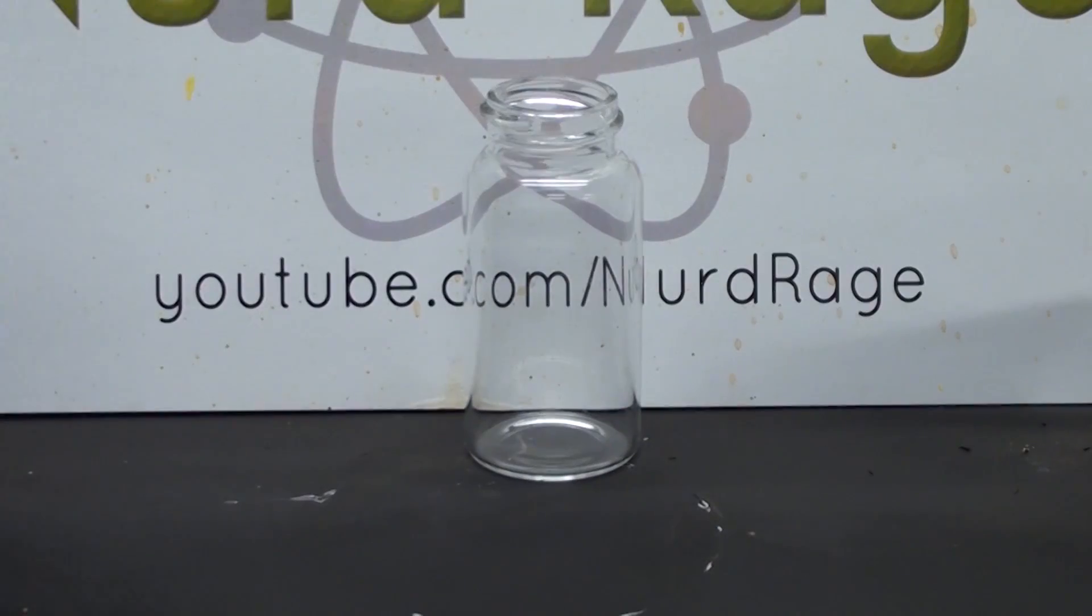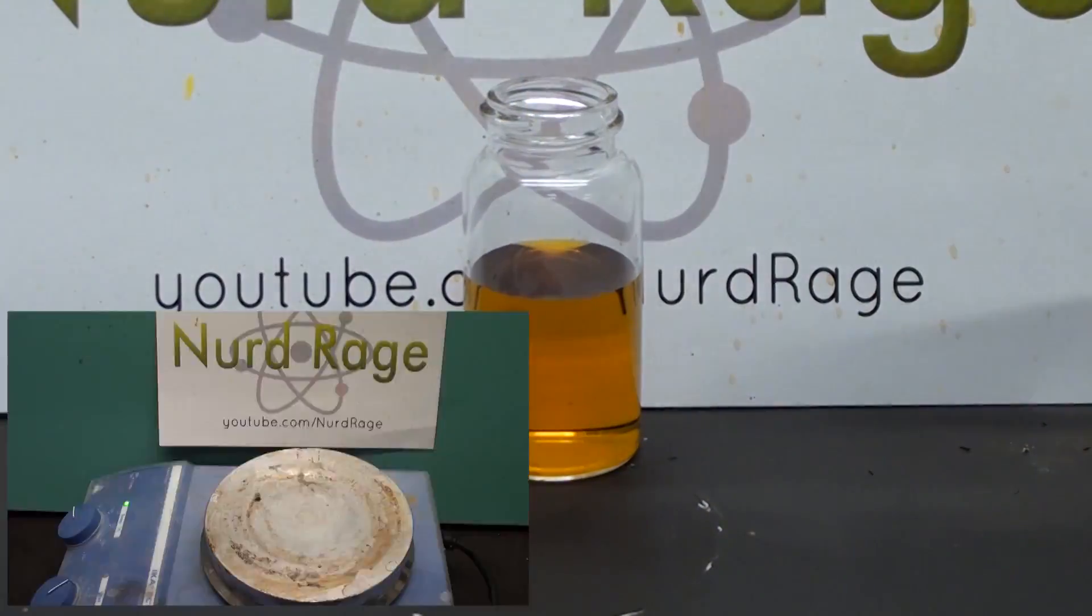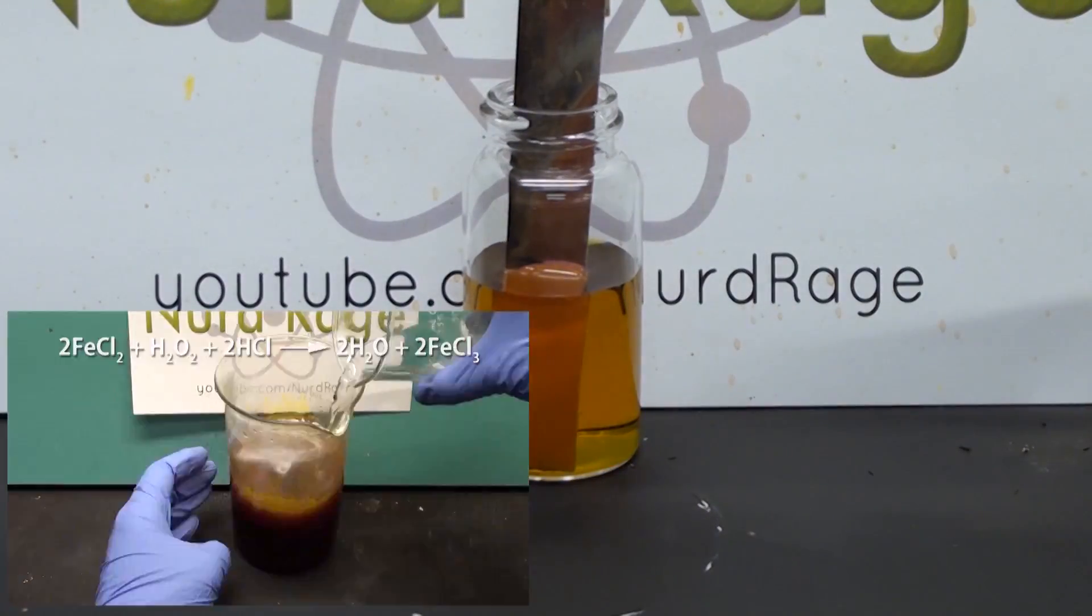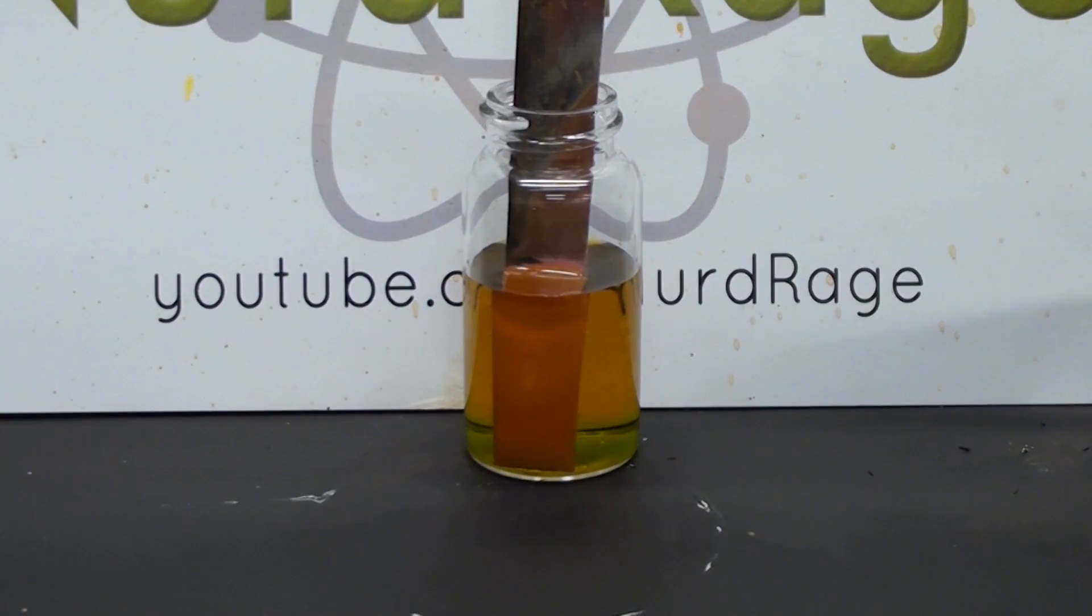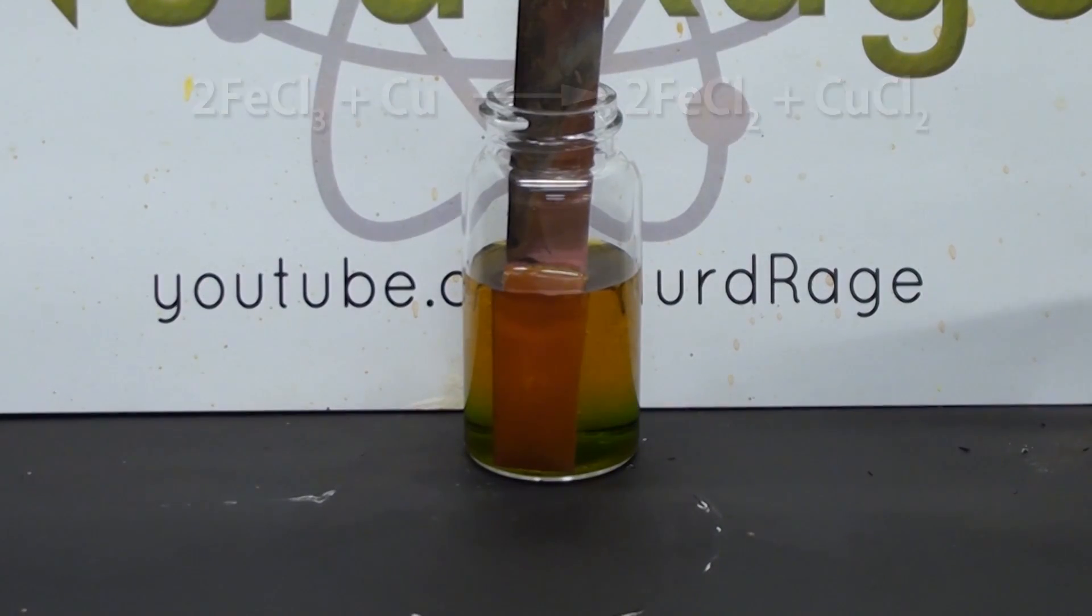Now we start the metal chloride family of etchants and the first and most famous member is ferric chloride. I already have a separate video on exactly how to make it so I won't repeat it here. The chemistry works by oxidizing the copper to copper chloride while the ferric chloride is reduced to ferrous chloride. A great advantage is that it does not decay in storage and unused etchant can last indefinitely in an airtight container. Recycling is possible but requires extra chemicals and a lot of effort. It might be more straightforward just to dispose of it.